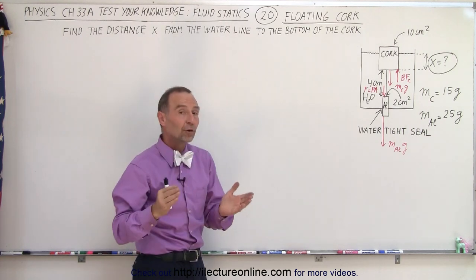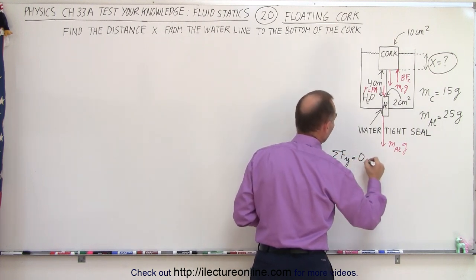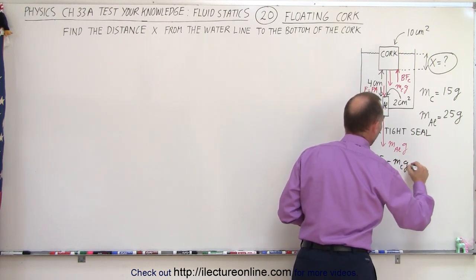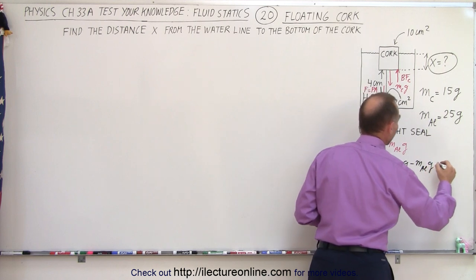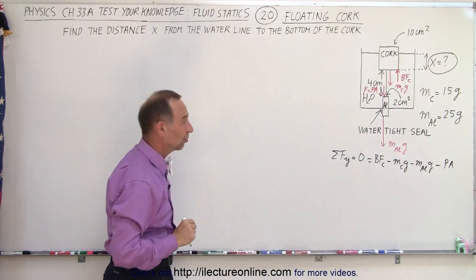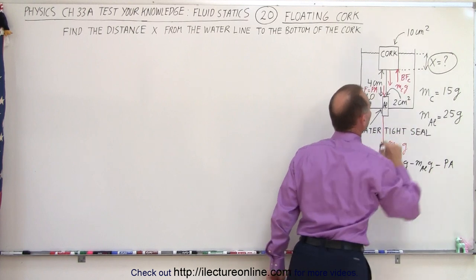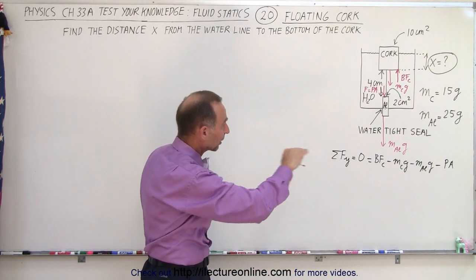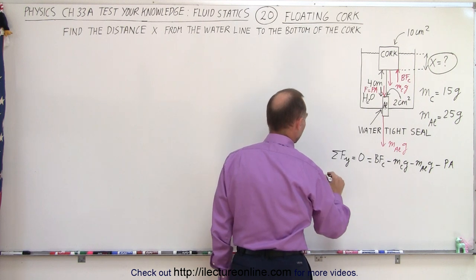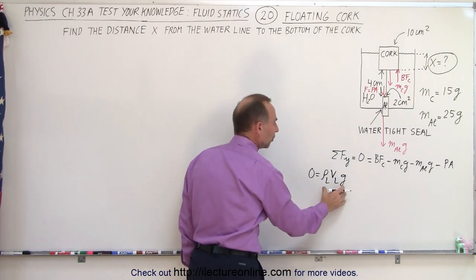So what we're going to do now is add up all the forces in the y direction. The sum of the forces in the y direction equals zero. We have the buoyancy force pushing up on the cork, minus the weight of the cork, minus the weight of the aluminum, and minus the pressure times area of the liquid on top of the aluminum — all that together adds up to zero. So we need to find this distance, the distance from the water line to the bottom of the cork. Let's plug in everything in terms of x. Zero equals the buoyancy force on the cork, which would be the density of the liquid times the volume of the displaced liquid times g.